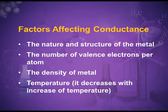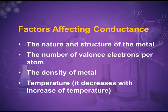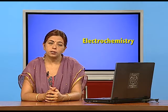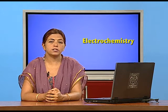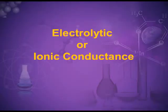Factors affecting metallic conductors: the nature and structure of the metal, the number of valence electrons per atom, the density of the metal, and temperature. The metallic conductance decreases with increase of temperature.